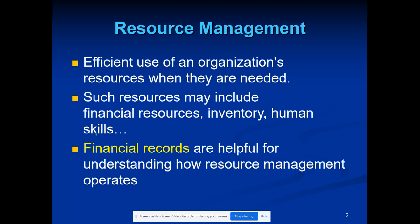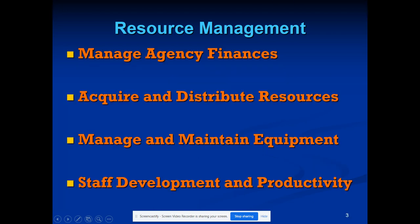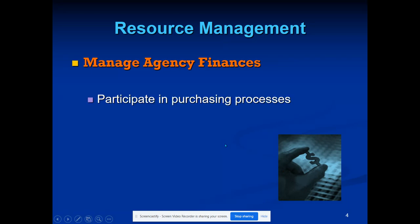Hospitals have to do basically the same thing — they have to figure out how they're spending their money year to year, quarter to quarter, not only where it's going but how much they've been buying of things. Track not only money spent but how many nurses it took last year to run CMC Maine, so they can keep track of all that. These are the four categories: managing agency finances, acquiring and distributing resources, managing and maintaining equipment, and staff development and staff productivity.